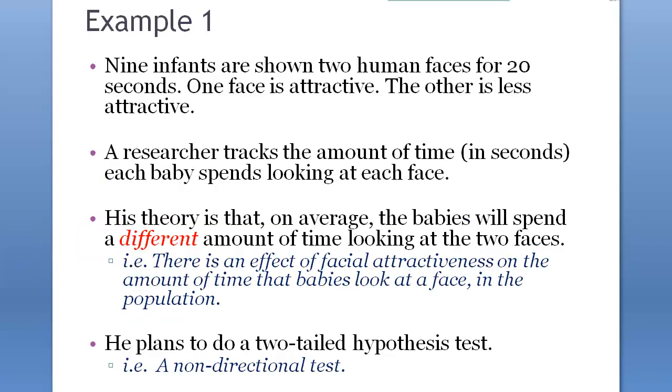So let's look at the example problem here. Nine infants have shown two human faces for 20 seconds. One face is attractive, the other is less attractive, and the researcher tracks the amount of time in seconds each baby spends looking at each face. His theory is that, on average, the babies will spend a different amount of time looking at two faces.